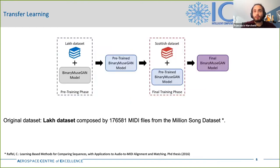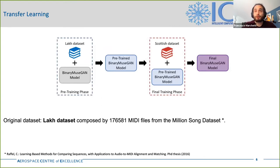One novelty introduced in this work is the use of transfer learning with a GAN model for music generation purposes. From a metaphorical point of view, a model which learns using transfer learning can be seen as a guitarist who learns how to play guitar by playing blues, but then moves on to other genres like jazz or funk. Similarly, the model was pre-trained on the LAC dataset, composed of almost 200,000 pop and rock songs, and then fine-tuned on a dataset composed only of classical Scottish tunes. The data are passed to the model in the piano roll format.